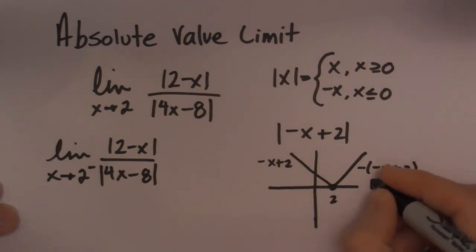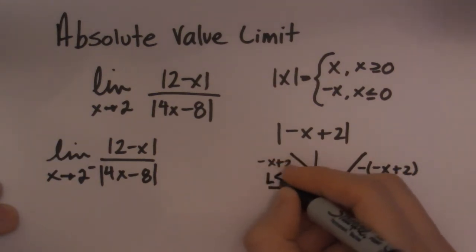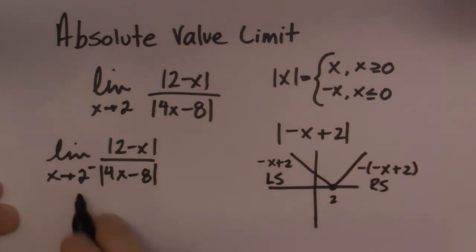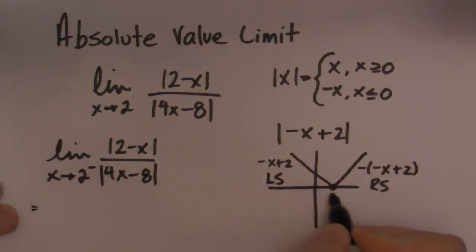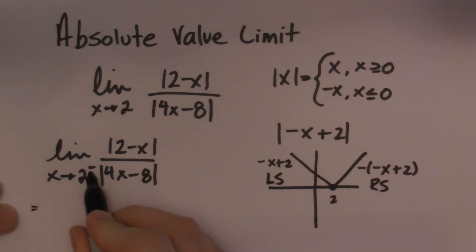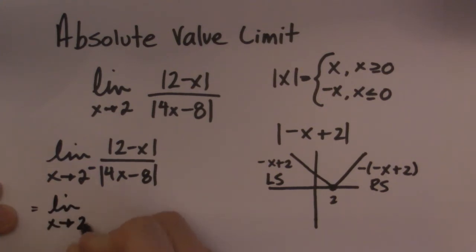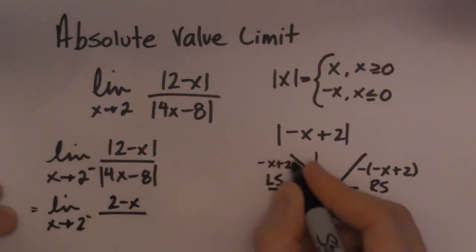So this is my right-side piece and this is my left-side piece. So when I'm doing the left of 2, I would choose simply 2 minus x. So I'll write it as 2 minus x, which is the same as this piece.